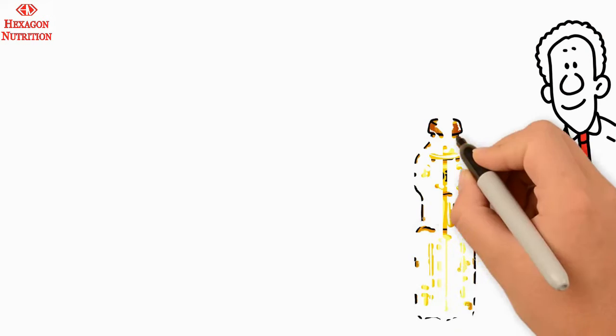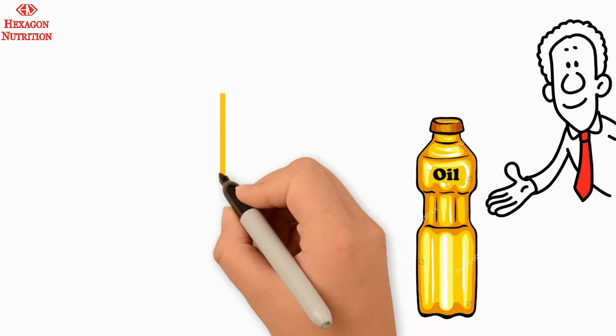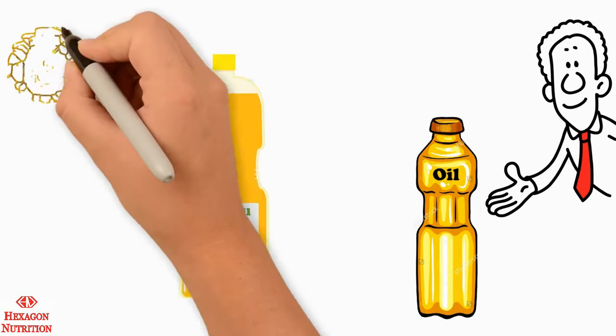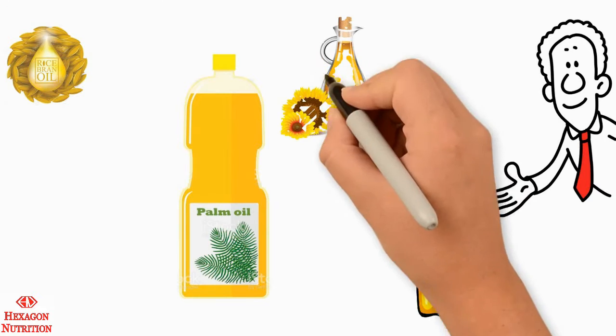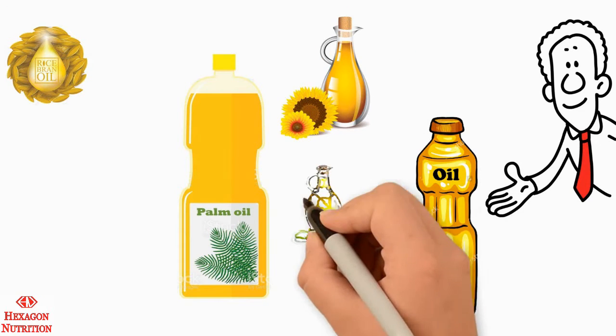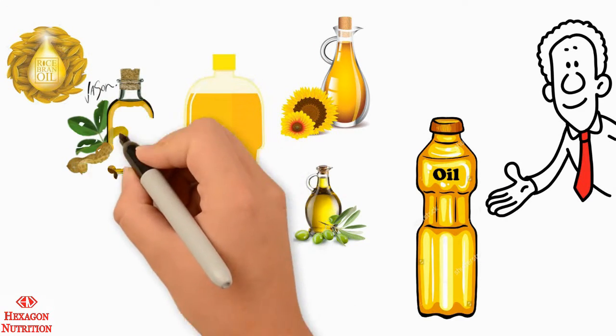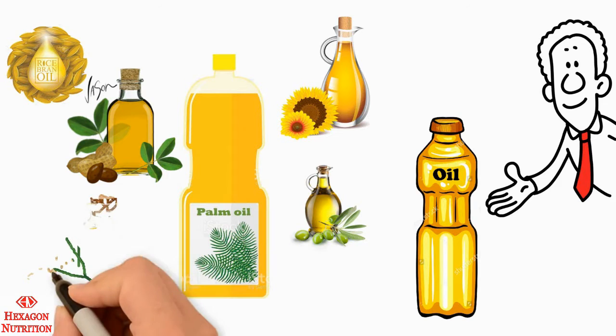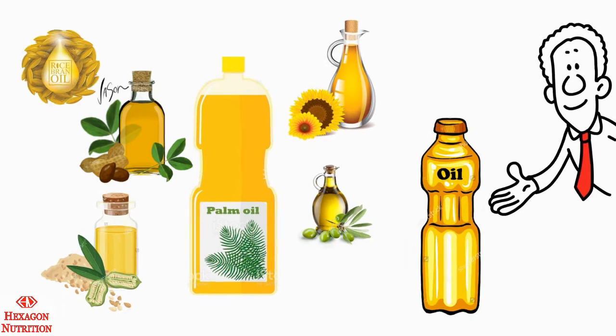Edible vegetable oil is an important component to cook food and adds to the taste of the food. Palm oil, rice bran oil, sunflower oil, soya oil, olive oil, groundnut oil, corn oil and sesame oil are examples of commonly consumed oils.